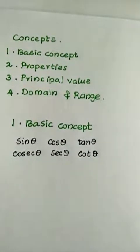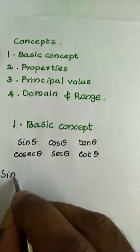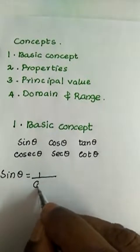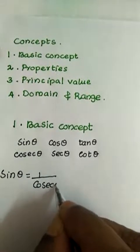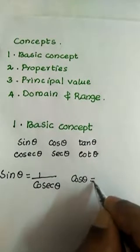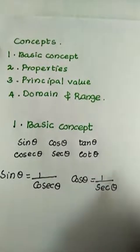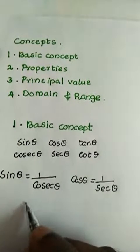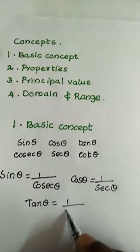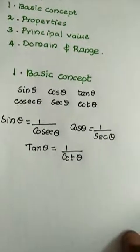The reciprocal of sine theta is cosec theta. We write sine theta equals 1 divided by cosec theta. Similarly cos theta equals 1 divided by sec theta. Also tan theta equals 1 divided by cot theta. These are reciprocals.